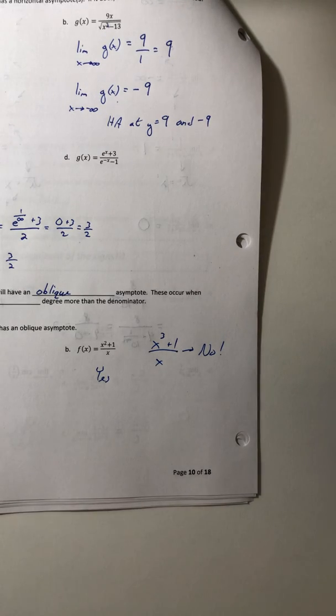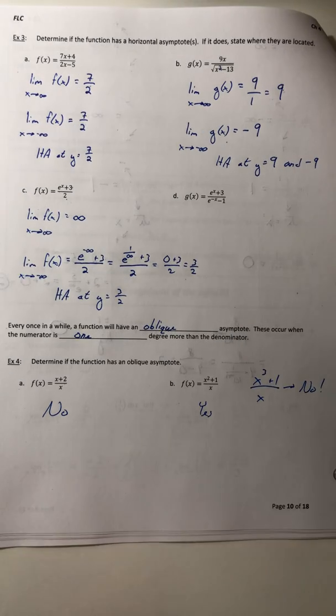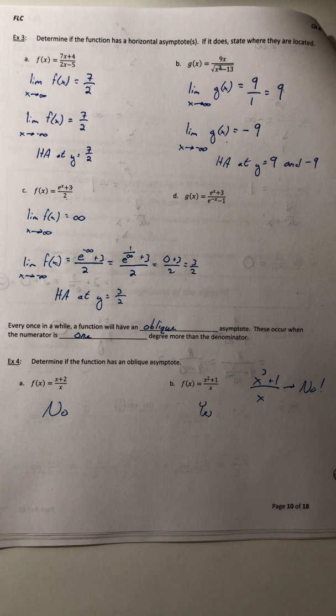Alright, so there you go. That's how we look at these limits at infinity. In the next section, now we're going to stick everything together. So concavity, increasing, decreasing, limits at infinity, and we're going to start sketching curves. So stay tuned. And there you go. There's section 4.5.